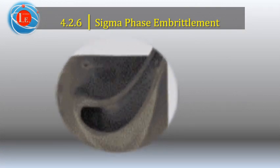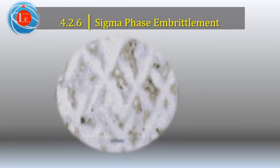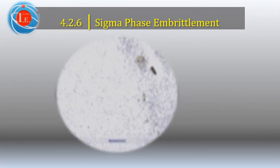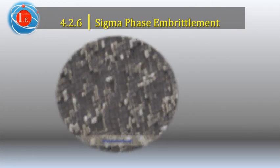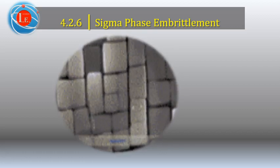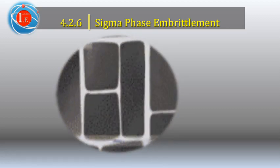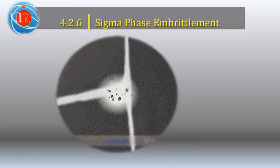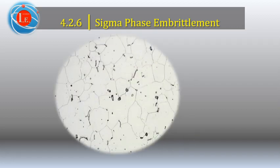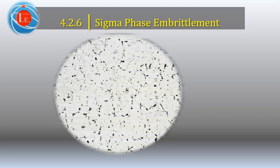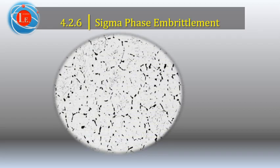Typically, high chromium, high molybdenum stainless steels, when exposed to elevated temperatures for a long time, form detrimental intermetallic and non-magnetic phases that precipitate preferentially in the ferrite phase.